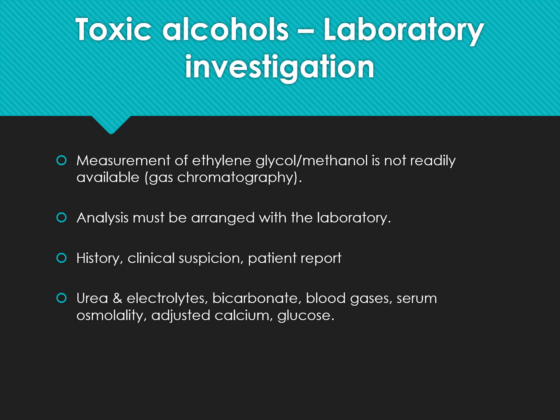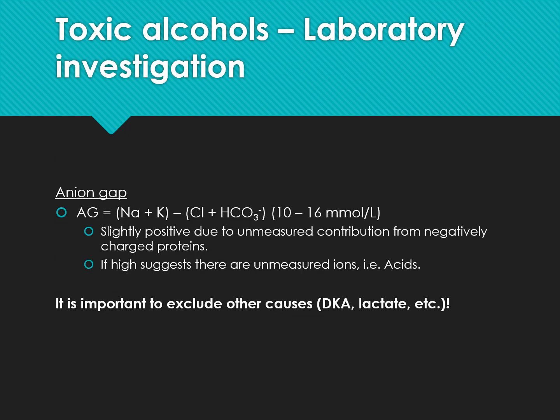Measuring toxic alcohols: ethylene glycol and methanol measurement is not readily available; gas chromatography can be used and must be arranged with the laboratory. There must be a clinical history and clinical suspicion. Investigate with urea and electrolytes, bicarbonate, blood gases, and calculate the anion gap: sodium plus potassium minus chloride plus bicarbonate. A slightly positive anion gap is due to unmeasured contributions from negatively charged proteins. A high anion gap indicates unmeasured ions such as acids; exclude other causes such as diabetic ketoacidosis and lactate.